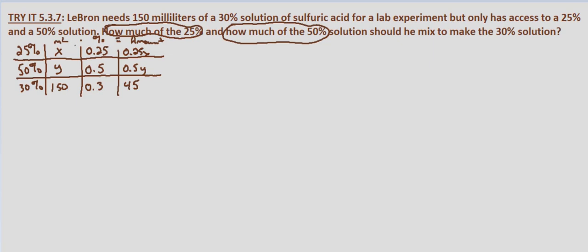To set up our system of equations, we know x plus y equals 150 — the number of mL of the 25% solution plus the number of mL of the 50% solution equals 150. Using the amount column, the concentration of 25% times the mL of that solution plus 0.5 times the mL of the 50% solution equals 45: 0.25x plus 0.5y equals 45.